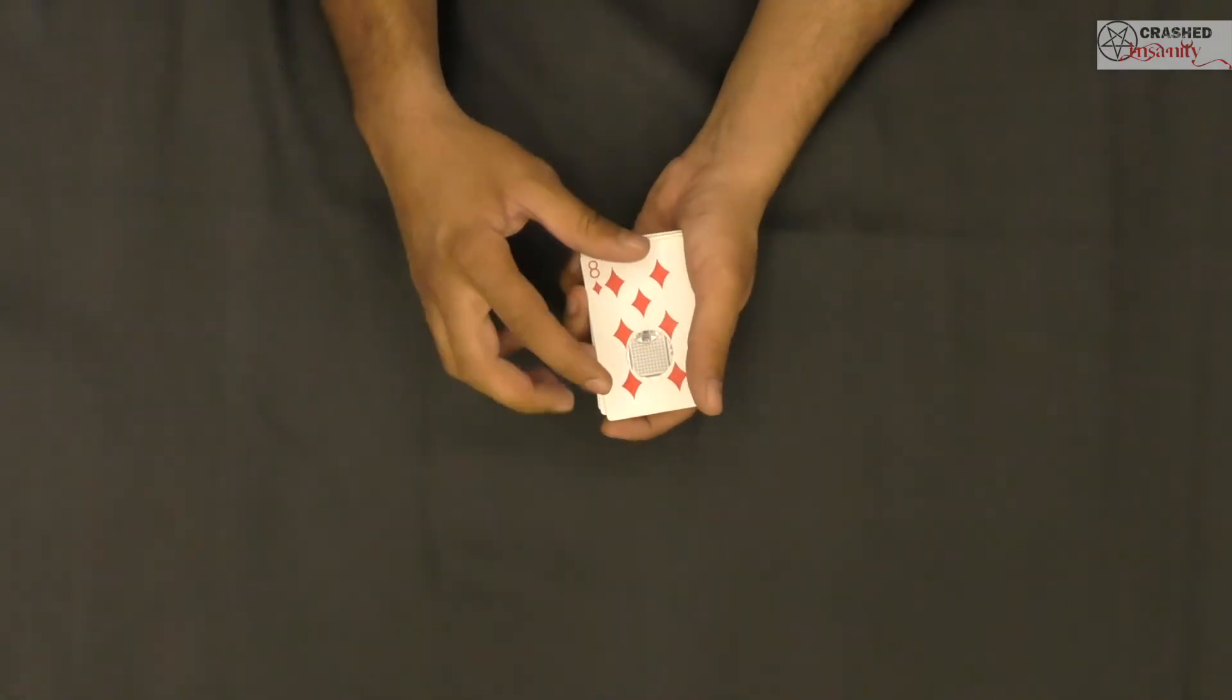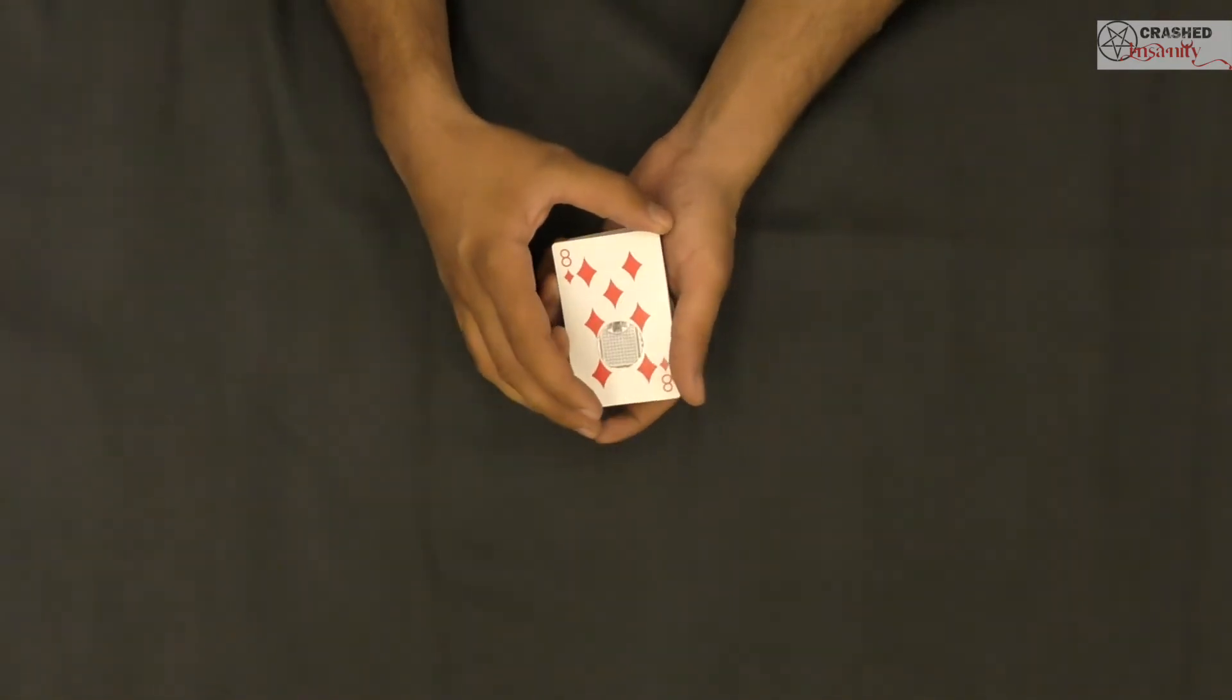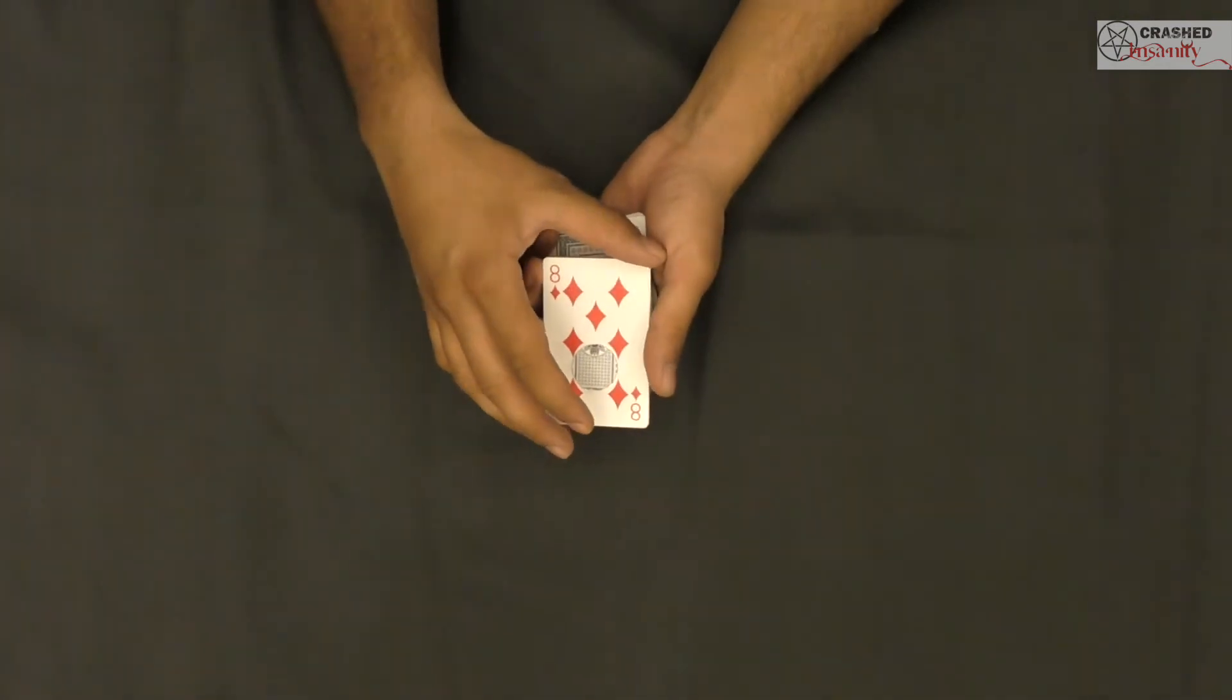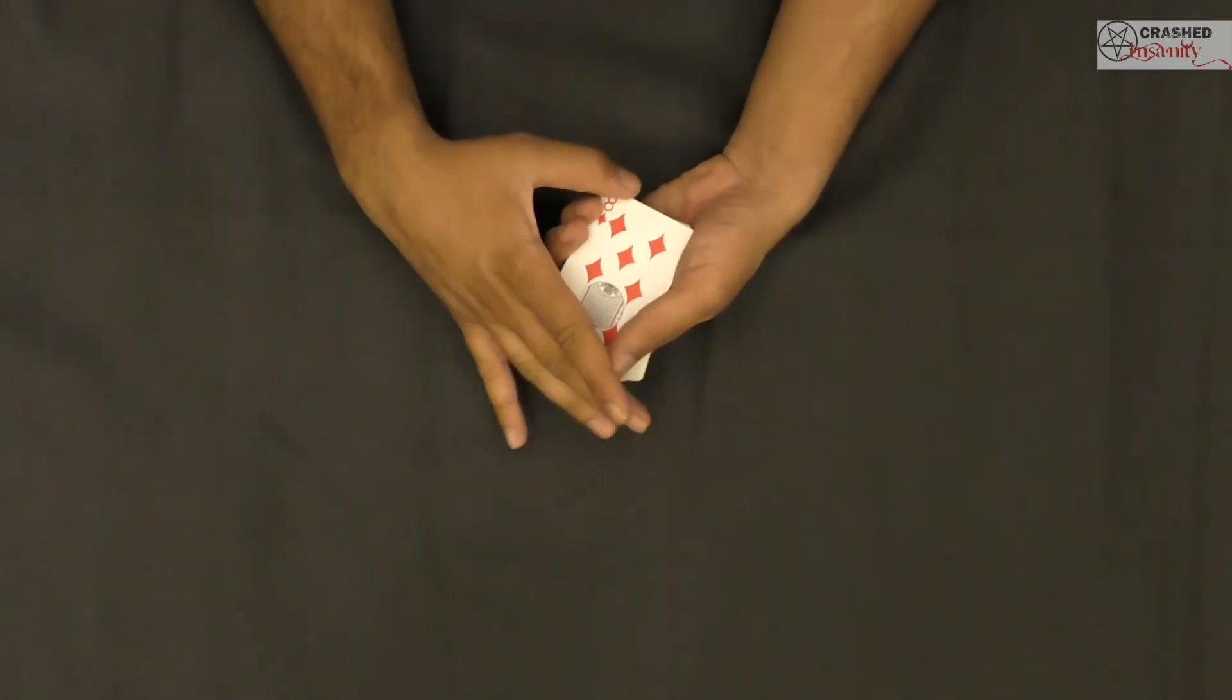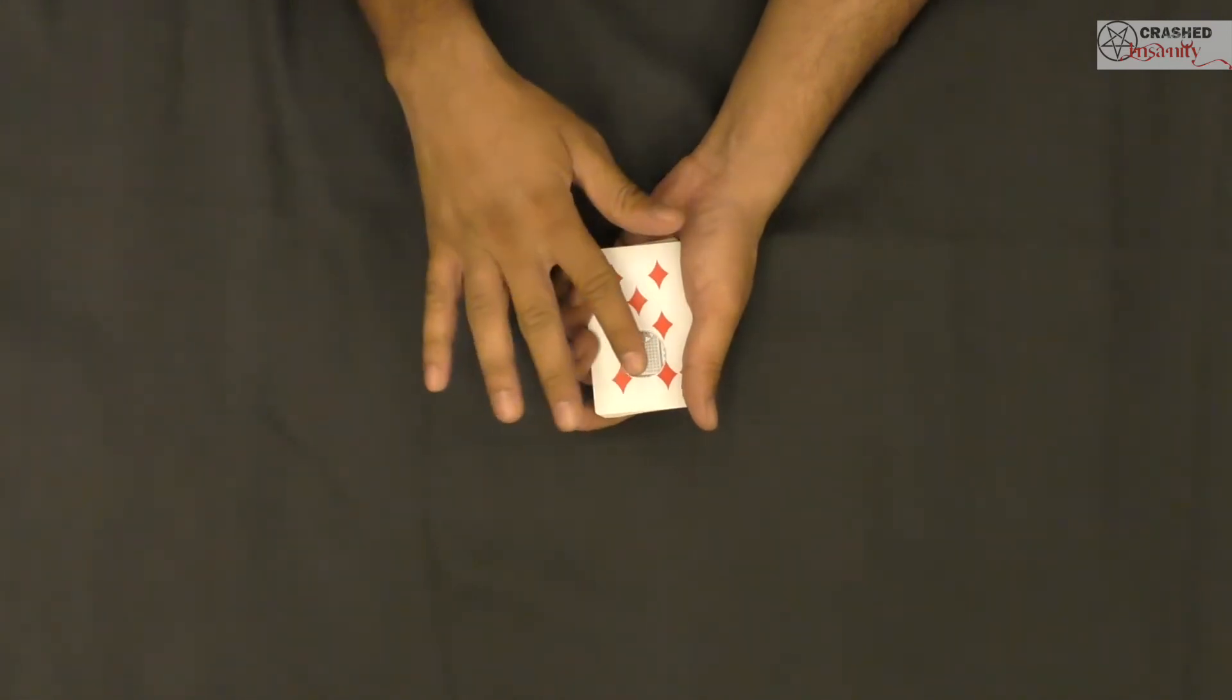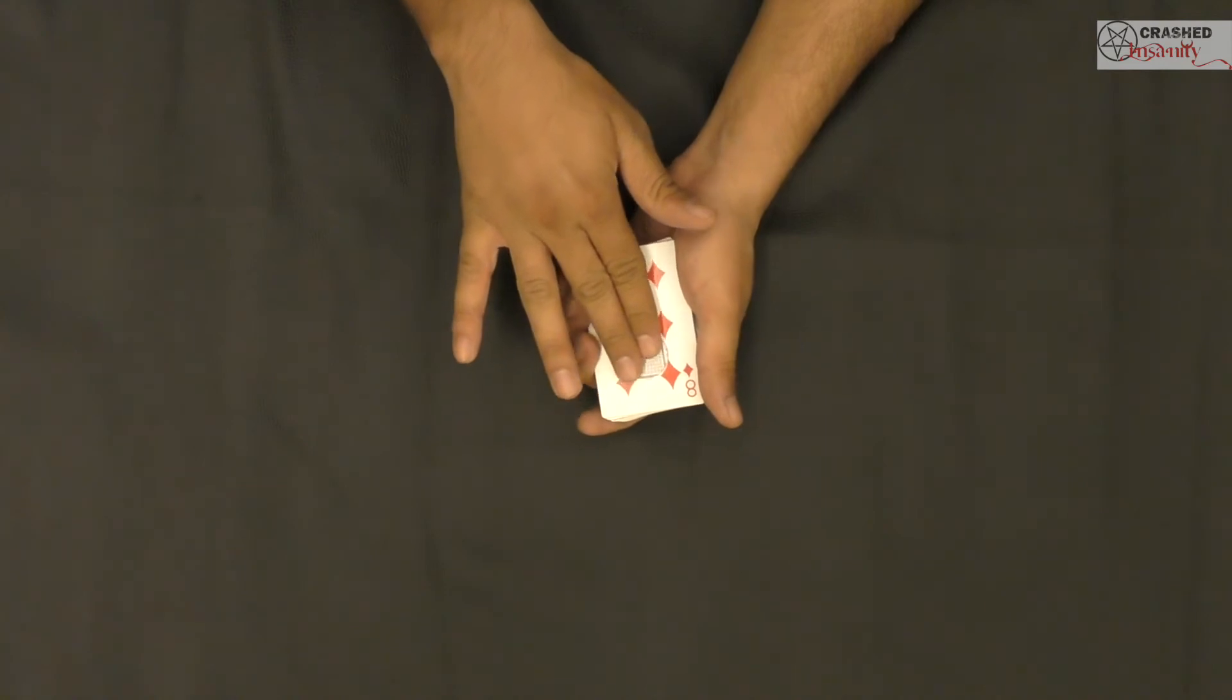However, things can get interesting. What I'm gonna do is change the illusion into magic. I'm gonna give the cards a wild shake, and by doing that, if I rub the piece which was pasted on top of the chosen card, the eight of diamonds, illusion turns to magic.